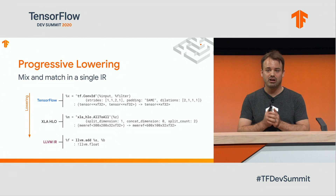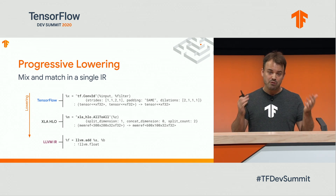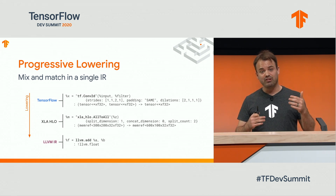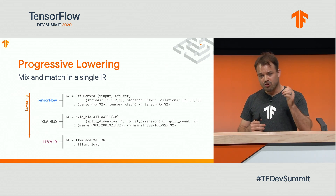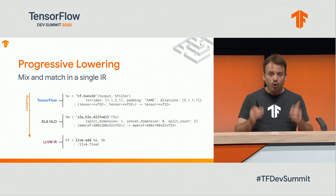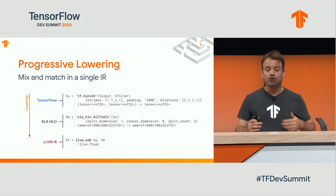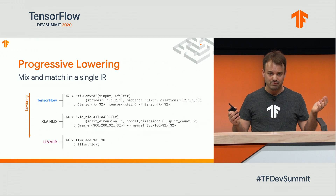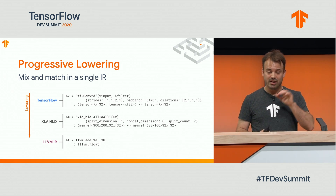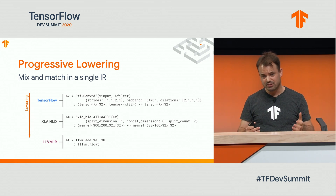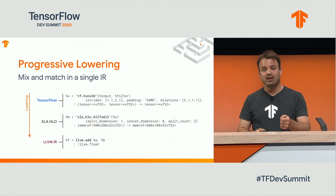Let's talk about progressive lowering. The ML in MLIR stands for multi-level. MLIR enables you to represent multiple different levels of operations all in the same IR — from a TensorFlow operation to XLA HLO to LLVM IR, all can be represented in MLIR. You can lower progressively from one form to another, and all of these can coexist together. For example, you can have a function that has a TensorFlow op, an HLO op, and an LLVM IR op. This ability to mix and match different levels of abstraction and dialects gives great power in modeling problems to suit your hardware specialization needs.